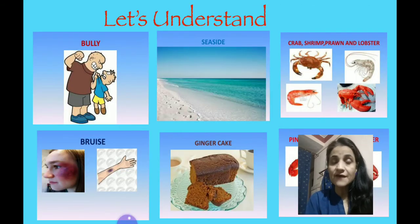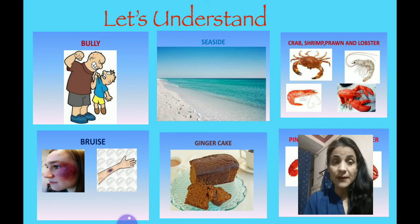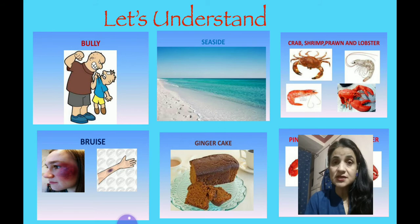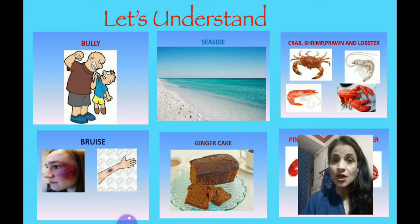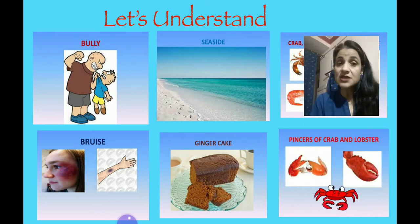Let's look at some pictures and understand the words. The first picture shows a bully — bully means teasing others, beating others. Second is seaside, the bank of the sea. Then crab, shrimp, prawn, and lobsters — they are sea creatures. The next picture shows a bruise, which means scratch marks. When you fight with others, you get scratch marks — that's called a bruise. Ginger cake, which you all love to eat. And the last picture shows the pincer of a crab — how a crab holds things.